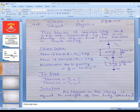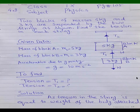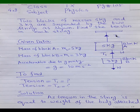To recap 4.8: two blocks — 5 kg (block A) and 3 kg (block B) — are suspended by two strings. The lower string T1 carries only the 3 kg block upward. The upper string T2 carries both blocks together, so when finding T2 I added m1g + m2g, because T2 supports the combined weight of both blocks.